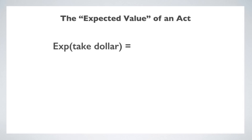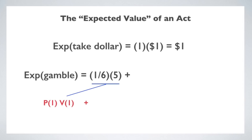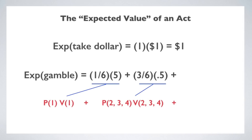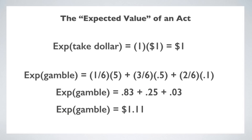Let's start with the expected value of taking the dollar. The only outcome we need to consider is getting the dollar, and the probability is one. So the expected value of taking the dollar is 1 × $1 = $1. Now, what's the expected value of the gamble? It's the sum of the payouts for each possible outcome, weighted by the probability of each outcome. The first term: probability of rolling a one (1/6) times the value ($5). The second term: probability of rolling a two, three, or four (3/6) times the value ($0.50). The final term: probability of rolling a five or a six (2/6) times the value ($0.10). When you do the math, you get $1.11.